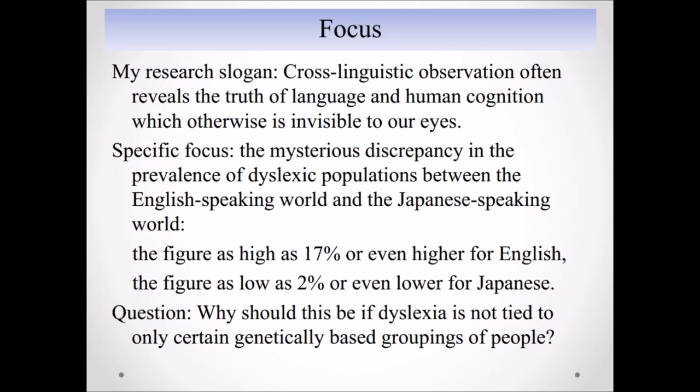Specific focus is the following. There is a mysterious discrepancy in the prevalence of dyslexic populations between the English-speaking world and the Japanese-speaking world. The prevalence is the figure that can go as high as 17% or even higher for English. For Japanese, as far as phonological dyslexia is concerned, the figure can go as low as 2% or even lower. The question is, why should this be the case if dyslexia is not tied to only certain genetically-based groupings of people?